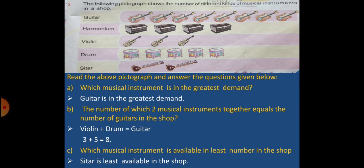C, which musical instrument is available in least number in the shop. Sitar is available in least number in the shop. As in front of sitar, you will see only two instruments.